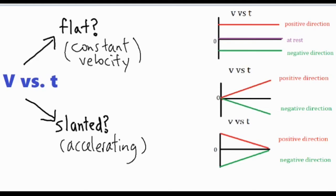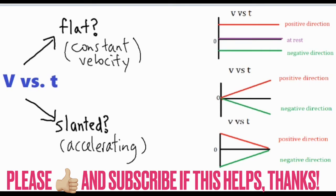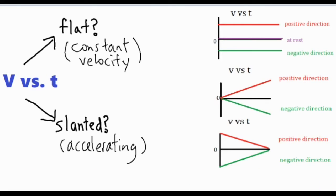Let's focus on the constant velocity graphs first. If it's flat, it's telling you that the object is maintaining the same velocity. All you really need to look at is its position in relation to the x-axis. If it's right on zero, the object is at rest. That's the only position that shows a velocity of zero. Anything above the x-axis shows a positive velocity, and if it's farther from the x-axis, that means it's going faster.